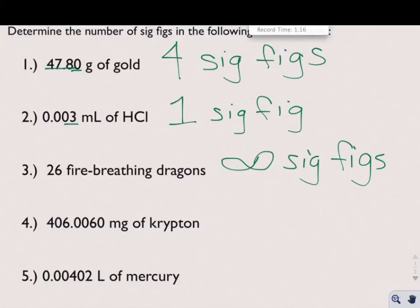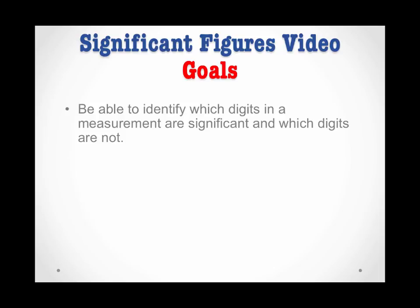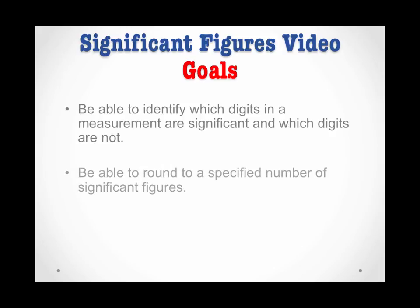That brings us to the end of this video. Let's quickly review our goals. First, we learned how to identify which digits in a measurement are significant — you copied down a series of rules telling you how to do that. Then we learned how to round to a specified number of sig figs. In the next video, we'll learn how to use these skills to round a calculated answer to the proper number of sig figs.